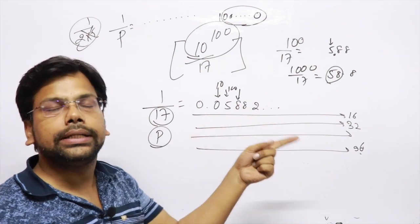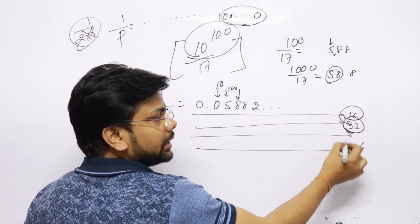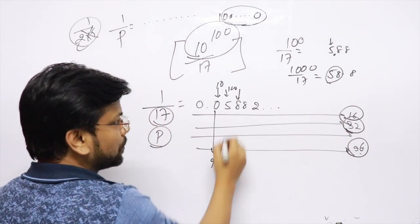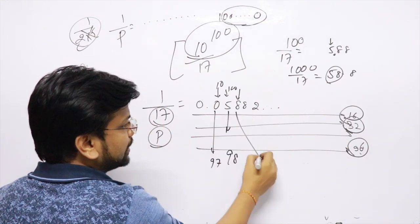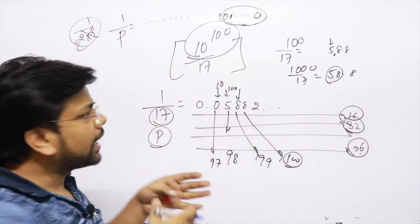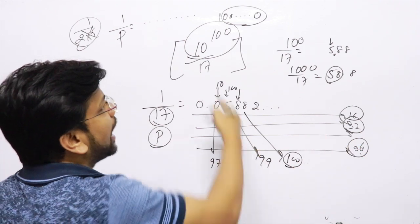What do you mean by the 100th place decimal? 16th repetition, 32nd repetition, even 96th repeat, this is my 97th digit, this is my 98th digit, this is my 99th digit, and this means the 100th digit numbers. So if I open this whole and solve this, I know that my 8 is the last integer.